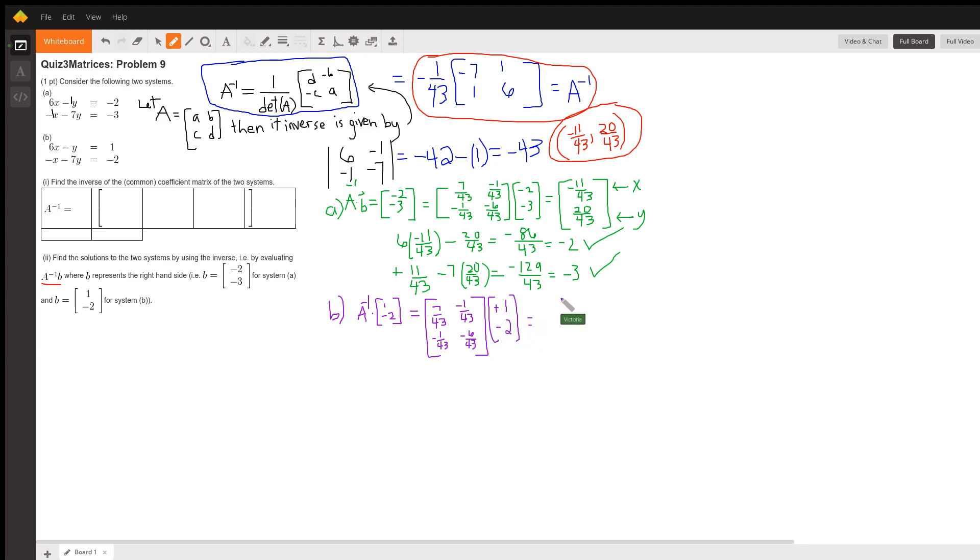This gives us, we're going to have x on top and y on the bottom when we're all done. This is 7 over 43 plus 2 over 43. I think that makes 9 over 43, 7 plus 2 yeah. And this one is going to be negative 1 plus 12, looks like this is going to be 11 over 43.